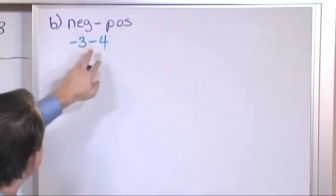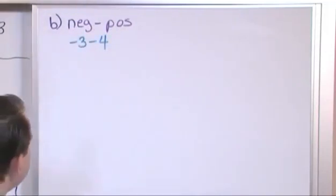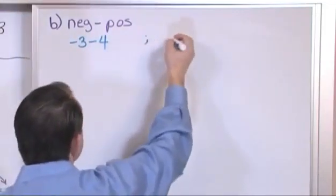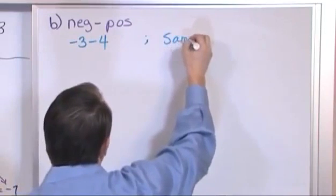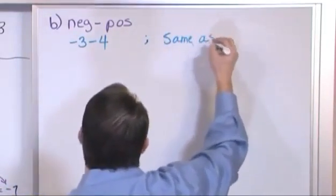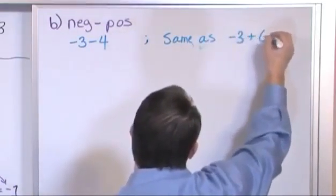So here's negative 3, that's a negative number. We're subtracting a positive number from it. And what I want to point out to you, before we even get to this, is this is the same as something you've already seen before. It's the same as negative 3 plus negative 4.